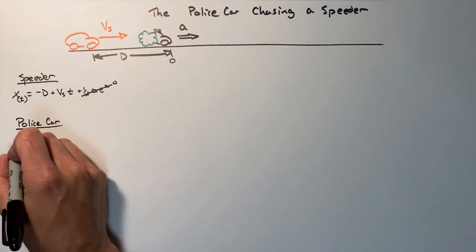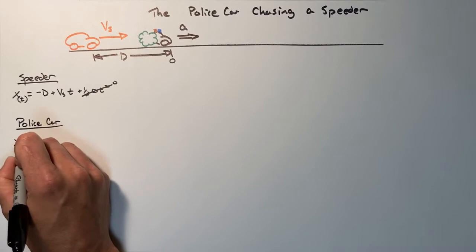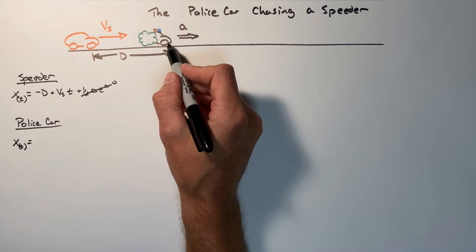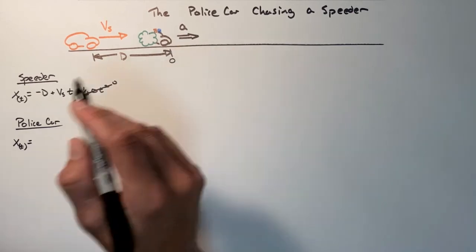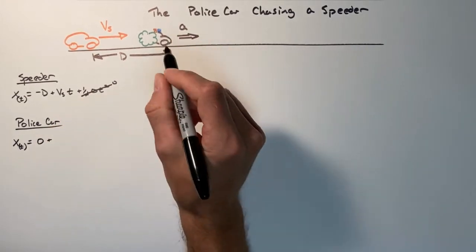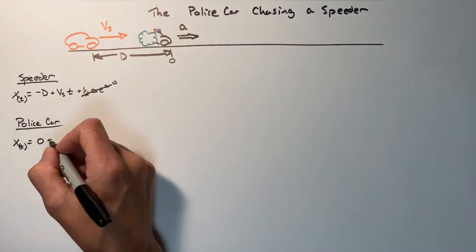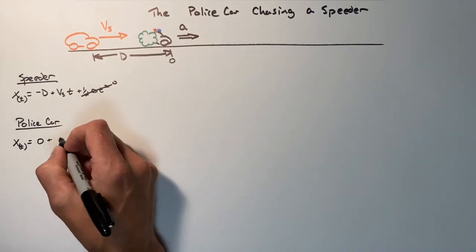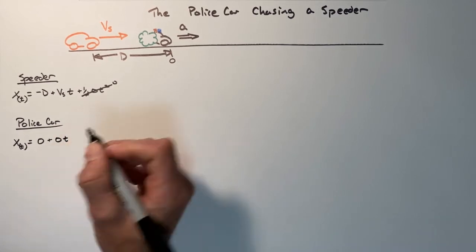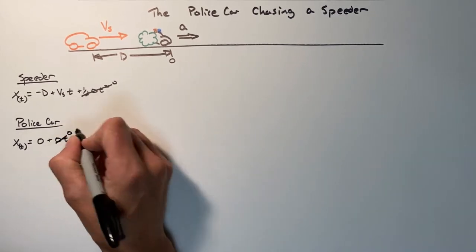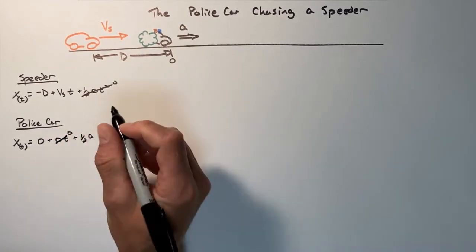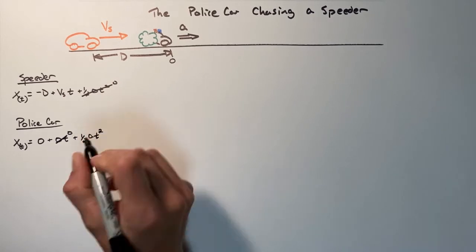Now let's do the same thing for the police car using the same kinematic equation. The initial position of the police car is zero. The initial velocity of the police car is also zero — he's starting at rest, hiding behind a bush. So the v-initial times t term is zero, and we get one-half times the acceleration of the police car multiplied by t-squared.